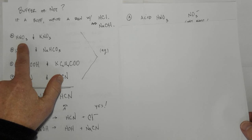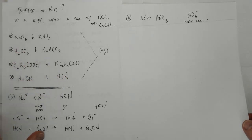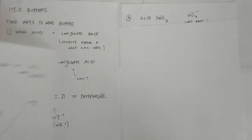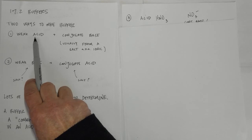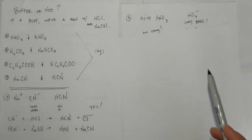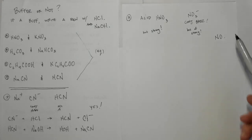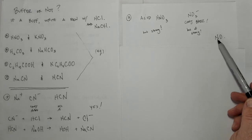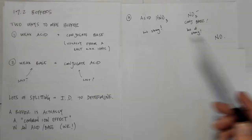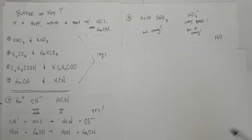Now let's look at letter A: HNO3 and KNO3. HNO3 is an acid — that's one criterion for a buffer — but it needs to be a weak acid. HNO3 is not a weak acid; it is a strong acid. It does have its conjugate base NO3- present, but it's the conjugate of a strong acid. So no, this is not a buffer solution. Buffer solutions must consist of a weak acid or weak base paired with its conjugate — this has the conjugate but the acid is strong, so it cannot act as a buffer.